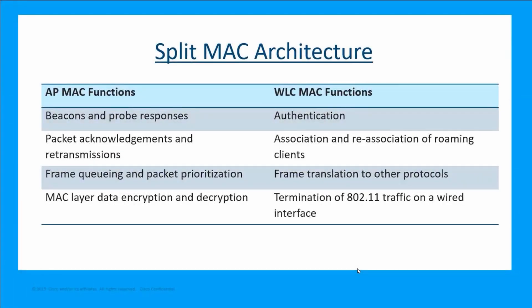A key component of CAPWAP is the concept of split media access control. With this, the functions normally performed by an individual access point are distributed across two functional components. The first functional component is the access point MAC function, which handles the beacons and probe responses, packet acknowledgements and retransmissions, and frame queuing and packet prioritization.